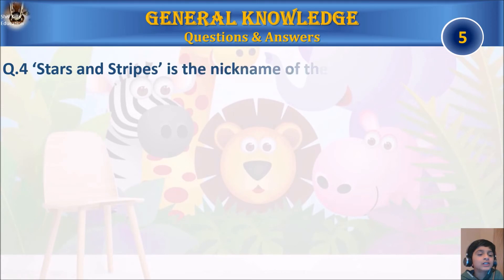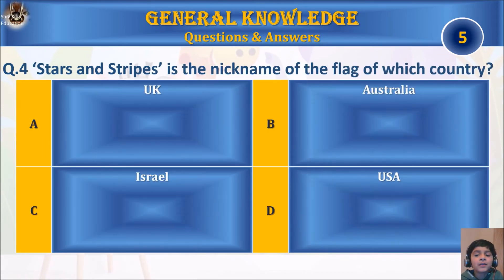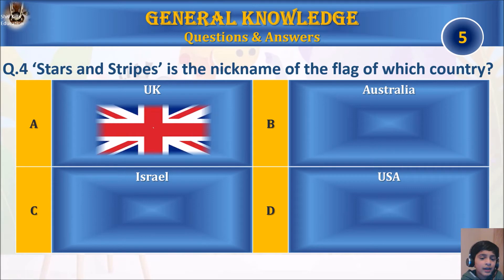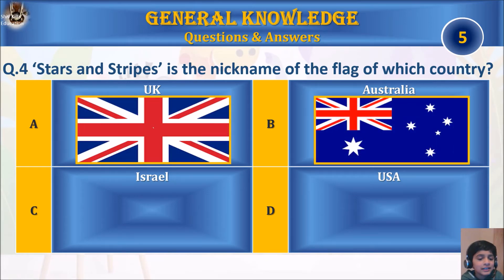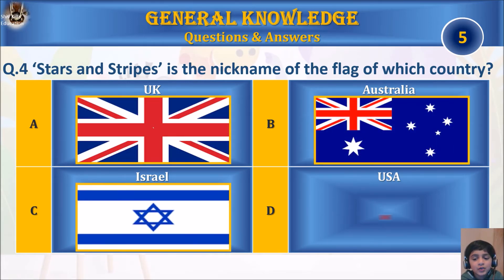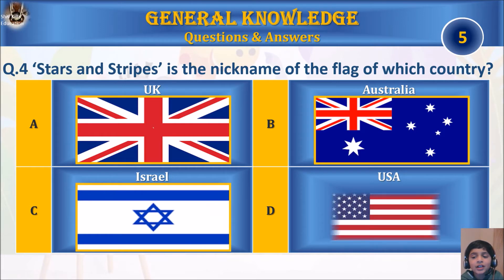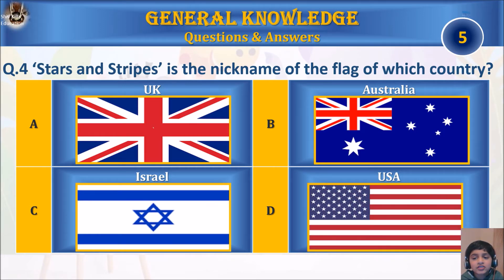Question 4: Stars and Stripes is the nickname of the flag of which country? A) UK, B) Australia, C) Israel, or D) USA? Your time starts.